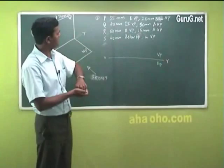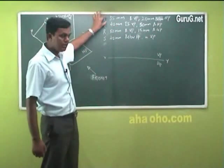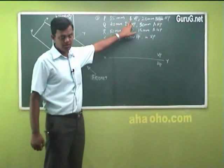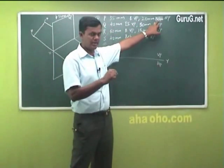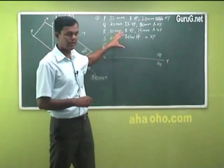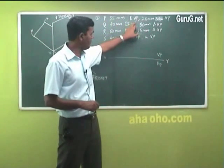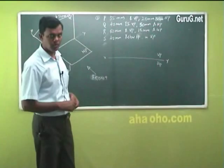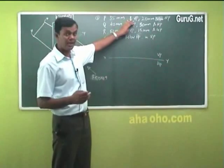Now on these four sets of different questions, this denotes a point P — 35 millimeter. B means behind. I will be writing the abbreviation: B means behind, and if it is below I will write it as 'below', and above I write A. So point P is 35 millimeter behind VP and 20 millimeter below HP. Where is my quadrant now — first, second, third, fourth? You have to think. So it is 35 millimeter behind VP.